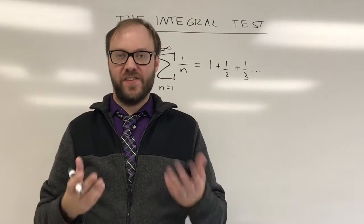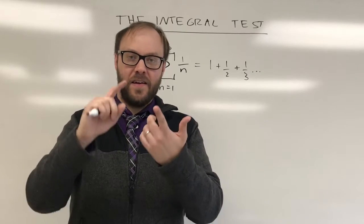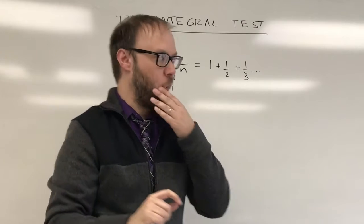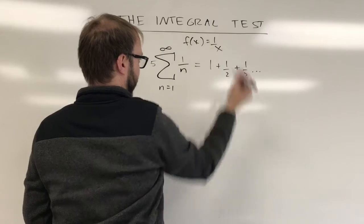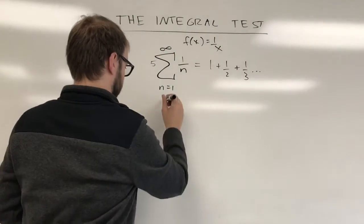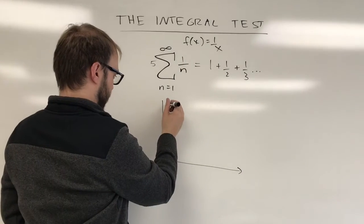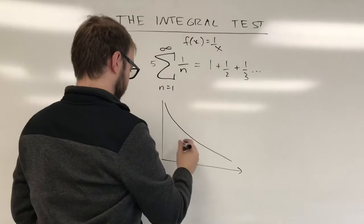And what the integral test says is that you can compare this to a related positive continuous decreasing function. And of course that related function would be f of x equals 1 over x. It's got an asymptote at 0. And you can basically make the comparison to that function.